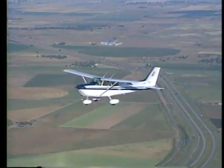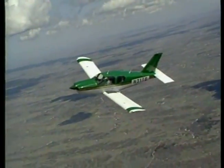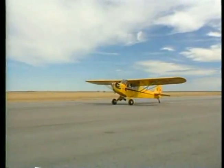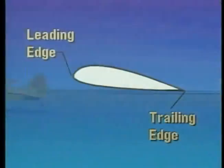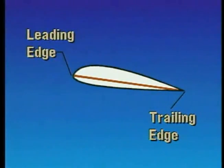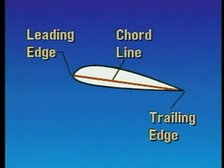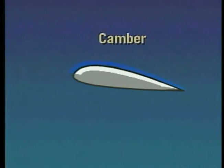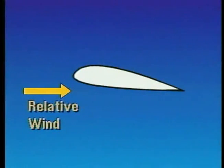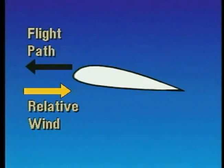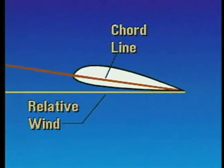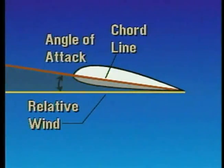Before we look at various airfoils and how they are configured to take advantage of the laws of motion and principles of lift, let's look at some terminology. A line drawn from the leading edge to the trailing edge of an airfoil is referred to as the chord line. The camber of an airfoil is the curve of its surface. The angle formed between the relative wind and the chord line is called the angle of attack.